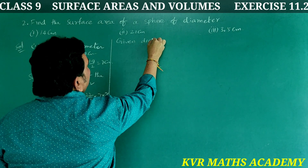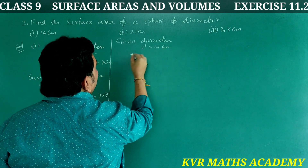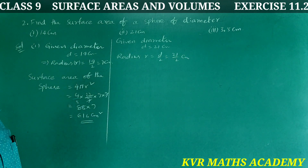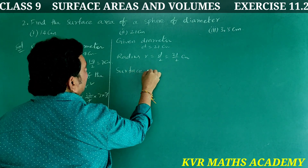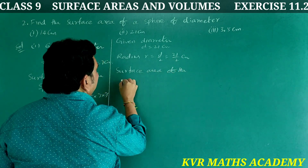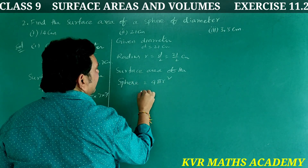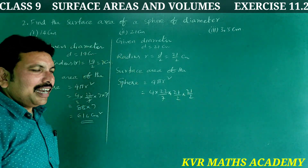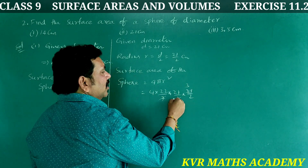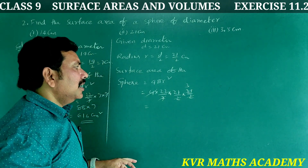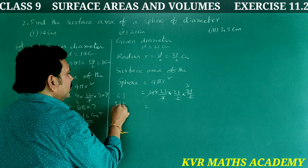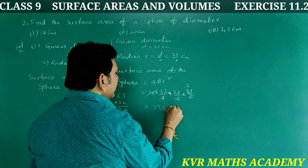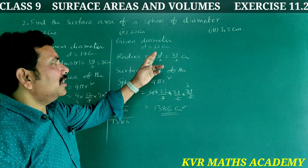Second one: given diameter d = 21 centimeters, so radius r = 21/2 centimeters. Surface area = 4 × (22/7) × (21/2) × (21/2). 7 into 21 cancels 3 times, and 2 × 2 = 4 cancels. Working through: 22 × 63 / ... gives 1386 centimeters square.